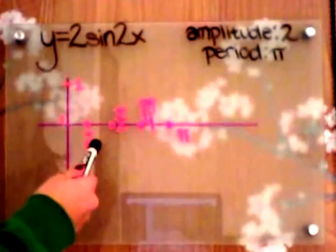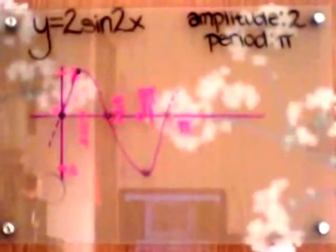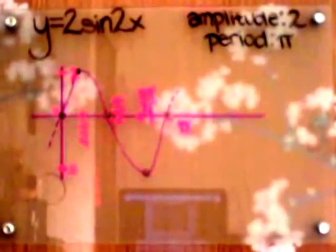Using our x-coordinates, we have 0, π over 4, π over 2, 3π over 4, and π. Since we have our points plotted now, it's going to be very easy to graph this.